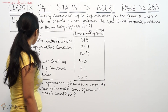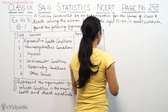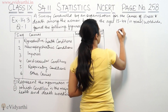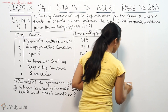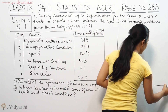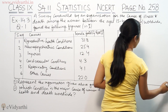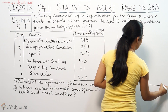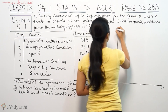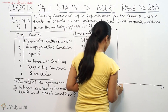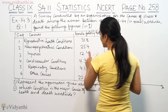So we will represent this information on a graph. This is the y-axis, this is the x-axis, and this is the origin at 0.